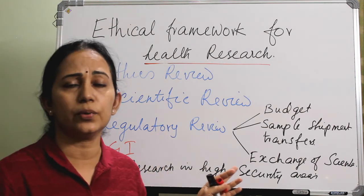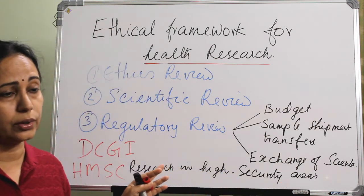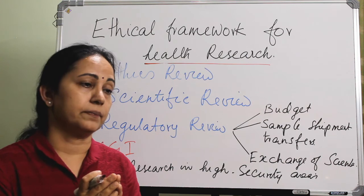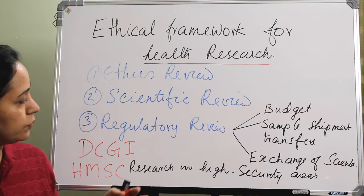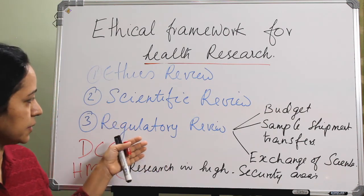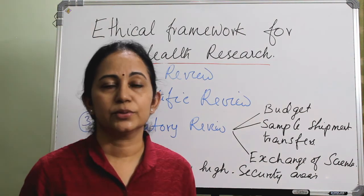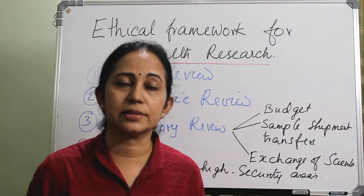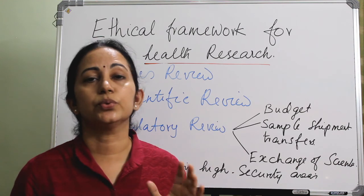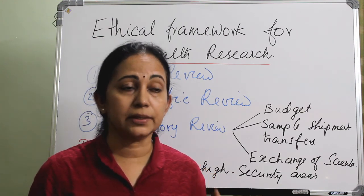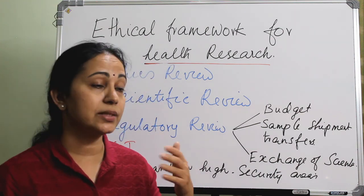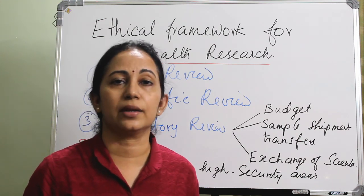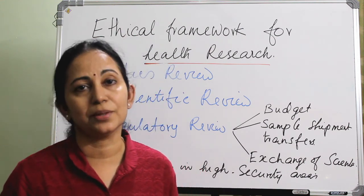If you are not violating ethical issues, it will be easy to get sanction from the regulatory review board and the scientific review board. In short, these are the main points regarding ethical concerns in health research. There are many challenges for researchers in terms of ethics, but it is always better to stick to the guidelines of the ethics review board, scientific review board, and regulatory review board so that your study will be easy to conduct and you can address potential risks without doing any harm to participants.